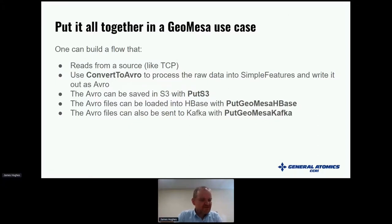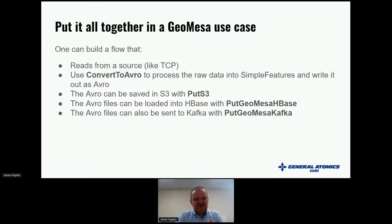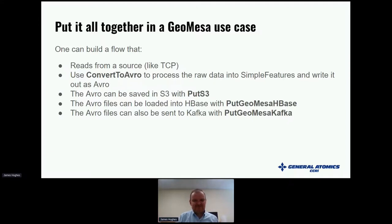Putting this all together in a geospatially-enabled architecture: we could read from a TCP source, convert those records to GeoAvro, then save a copy to S3. That lets us inspect it later, reload into a different database, or recover from HBase problems. Those same files can also be loaded into HBase and Kafka with the appropriate processors.